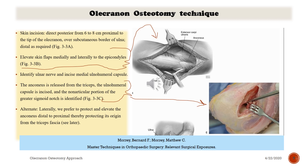Identify the ulnar nerve and incise the medial ulnohumeral capsule. Identify the anconeus muscle and release it from the triceps fascia. The ulnohumeral capsule is then incised laterally, and the nonarticular portion of the greater sigmoid notch is identified.